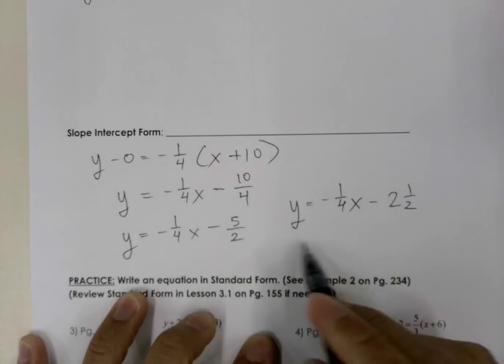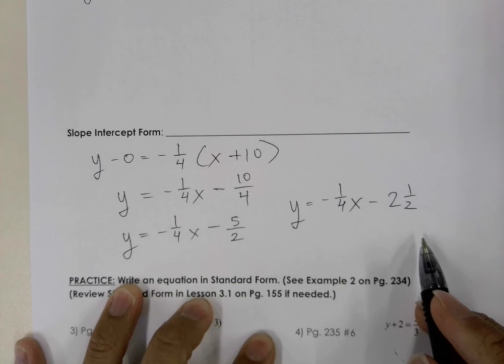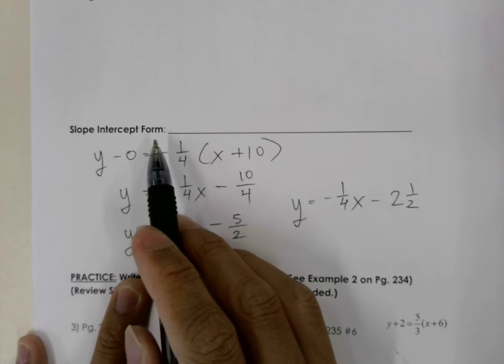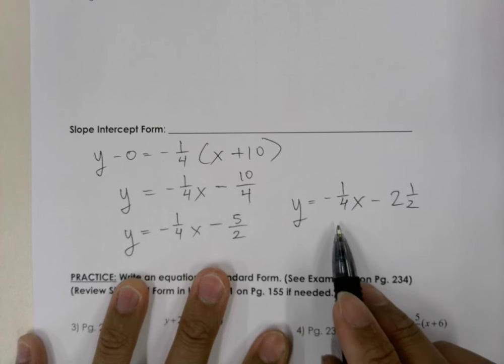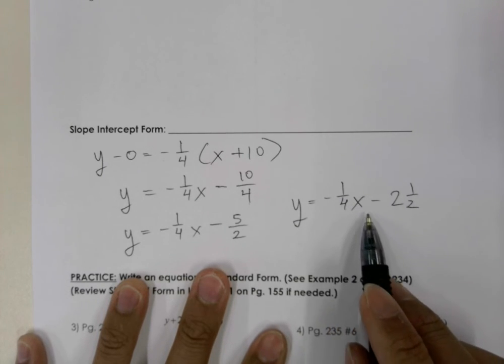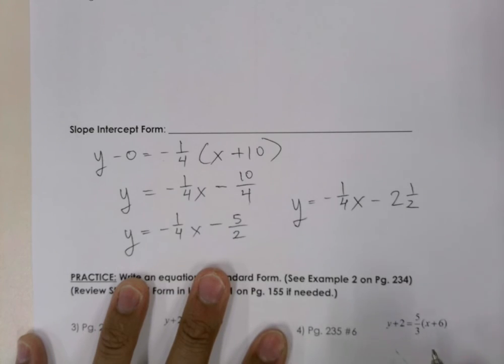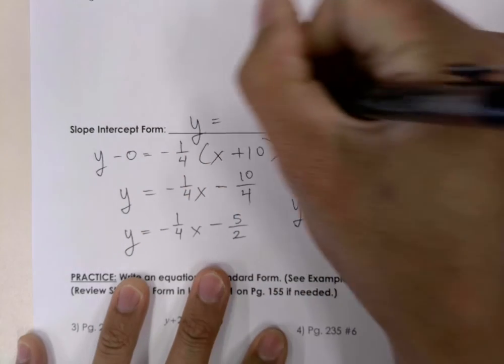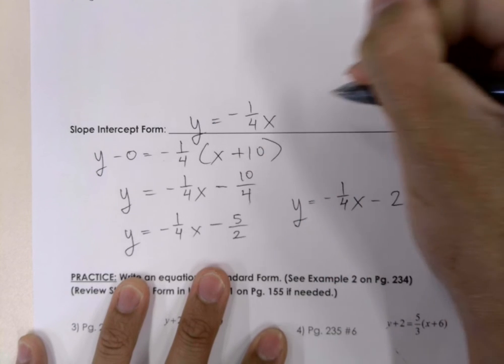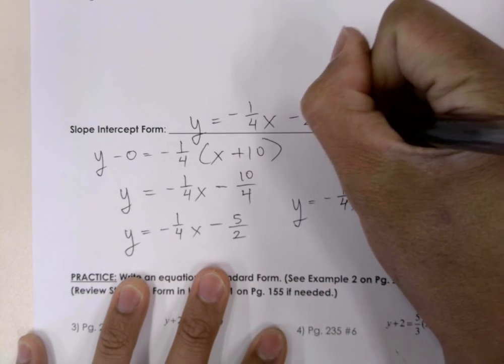And so this is our equation in slope-intercept form where our slope is negative 1 over 4 and our y-intercept is negative 2 and 1 half. y is equal to negative 1 over 4x minus 2 and 1 half. There we go.